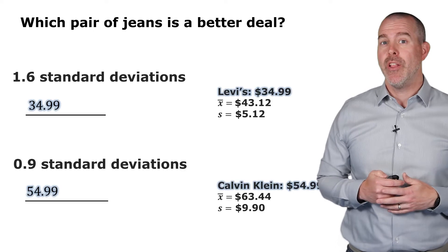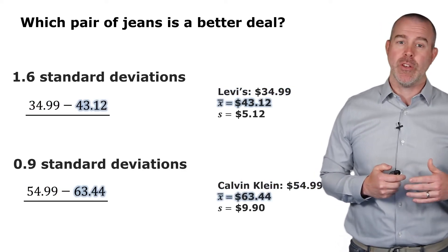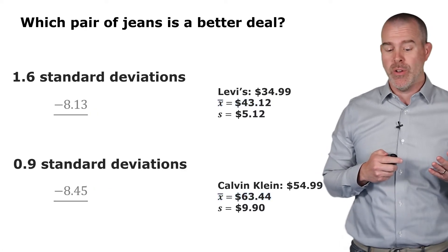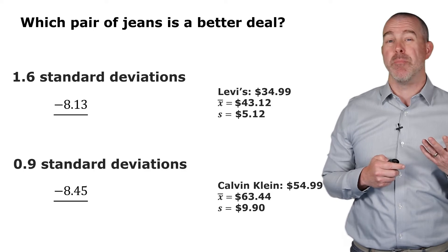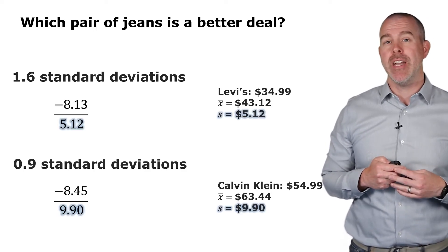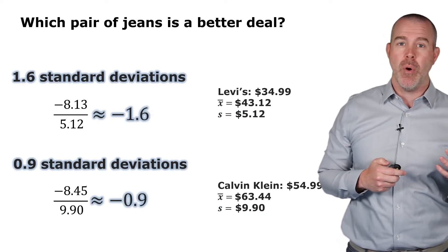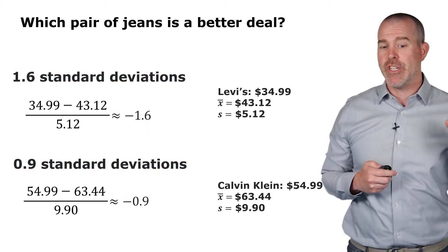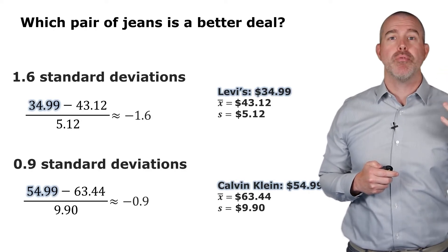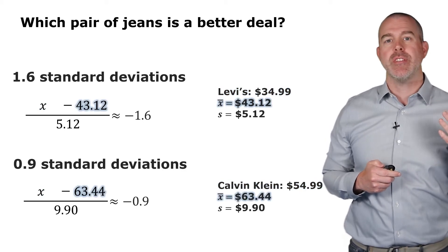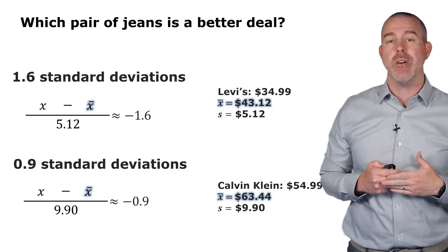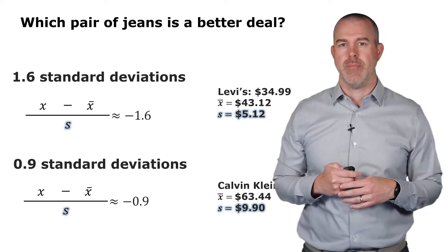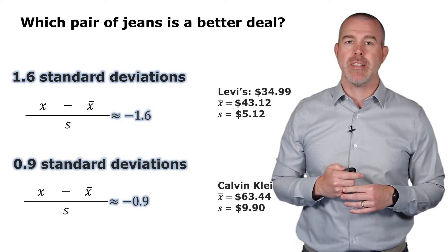Let's dive in a little bit more and talk about how this is calculated and get some symbols in here. You take the original price $34.99, subtract the mean $43.12, or for Calvin Klein $54.99 minus the mean $63.44. That gets you negative $8.13 and negative $8.45. Then divide by the standard deviation, which gets us negative 1.6 or negative 0.9. That's the number of standard deviations below the mean. The original prices are X, the means are X bar, and the denominator is the standard deviation S. That gets us the number of standard deviations, negative 1.6 and negative 0.9.